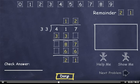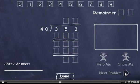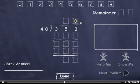I'll click the done button and move on to the next problem. 353 divided by 40. 40 can't go into 35, but it can go into 353 eight times. 8 times 0 is 0, and 8 times 4 is 32.